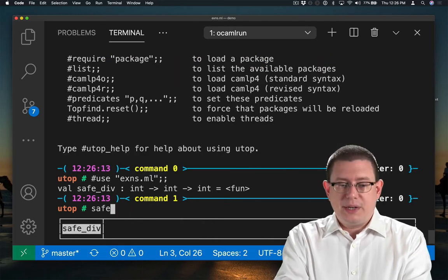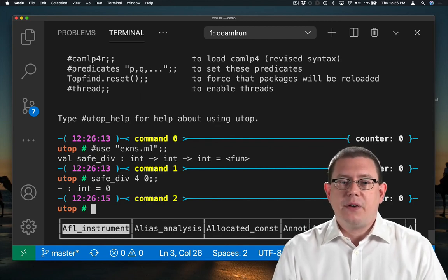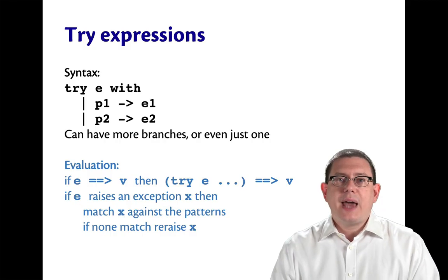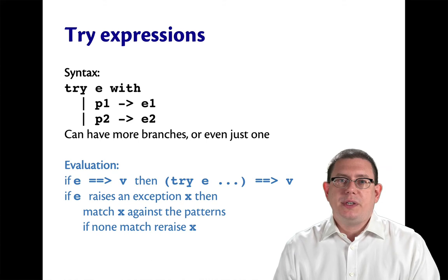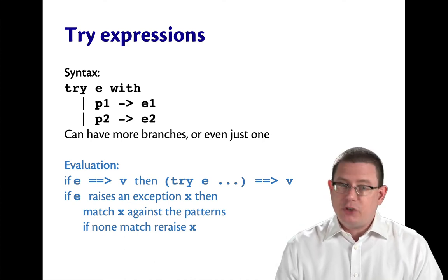Now, when we try to take the safe division of four by zero, we get zero instead of an exception. The syntax and semantics of try expressions is very similar to that of match expressions. The syntax is try e with and then some pattern branches. You can have more than two branches. You can have just one.